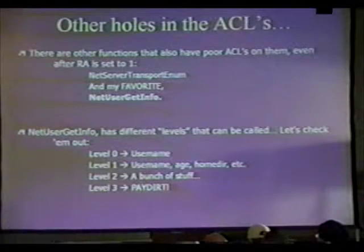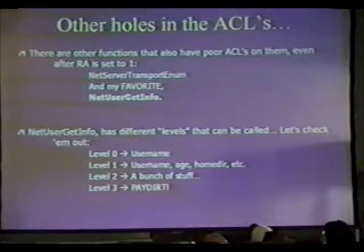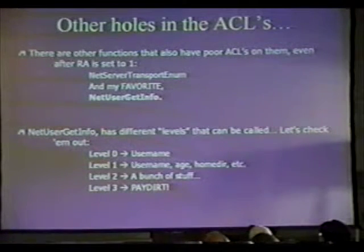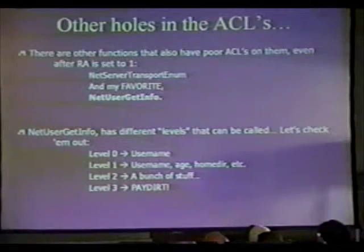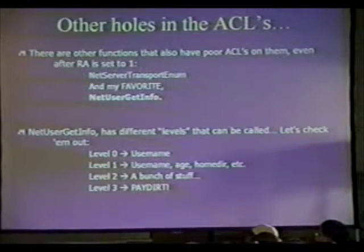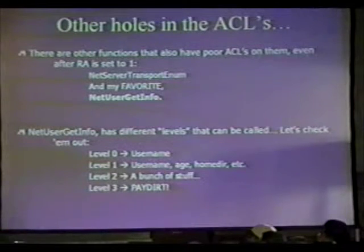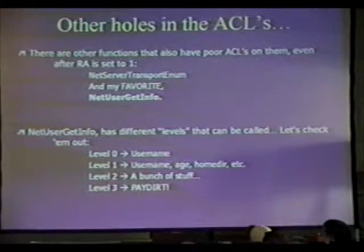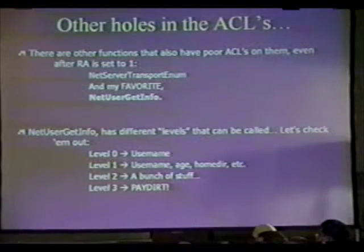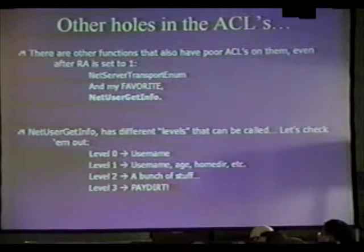In addition, there are some API calls that don't have proper ACLs on them. One of them is net server transport enum, which enumerates the network transports in use on a box. Back in NT4, whenever you had a RAS device, it had a transport named RAS. So you could enumerate a subnet as an anonymous user, find out all the transports — IP, IPX, NetBIOS, RAS devices — and know that people have rogue RAS devices on their network.